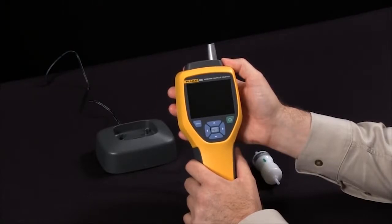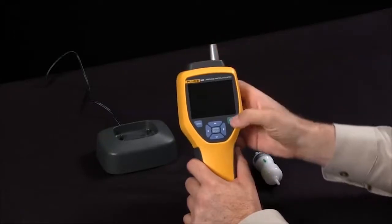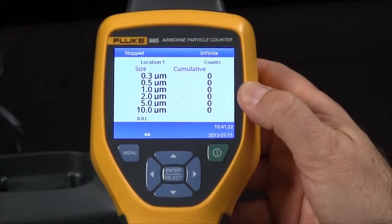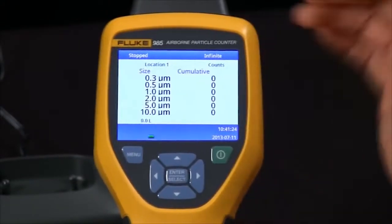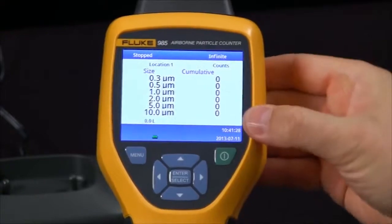How do I take measurements with the Fluke 985 airborne particle counter? Simply power on the device and your home screen will show you that we are sampling particulates in six different sizes, everything from 0.3 micron up to 10 micron.